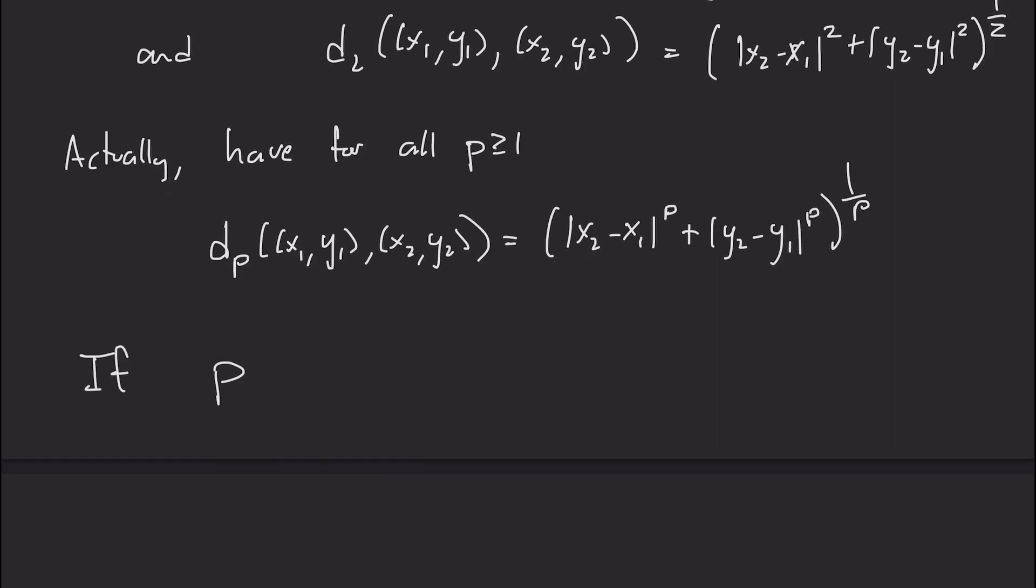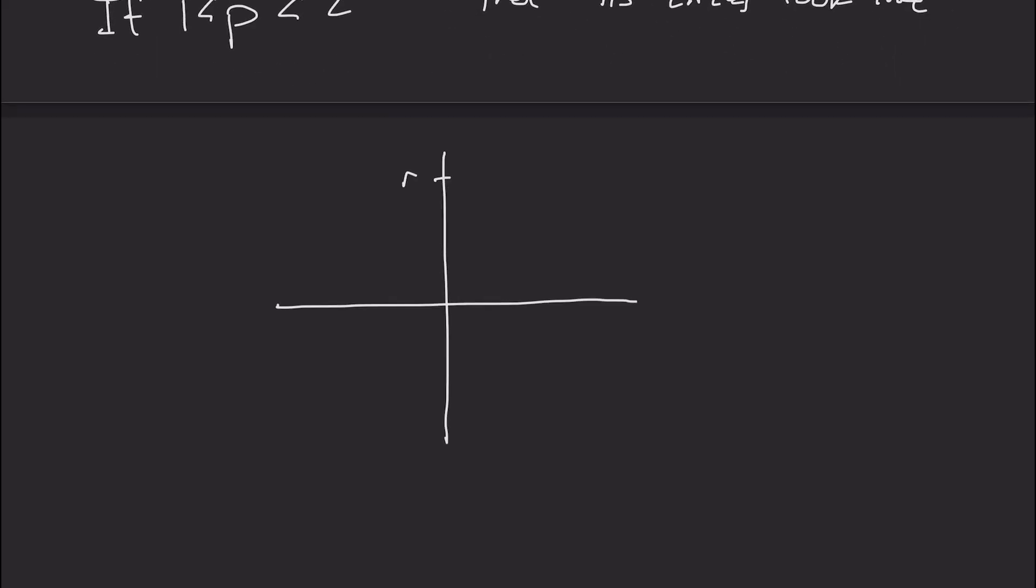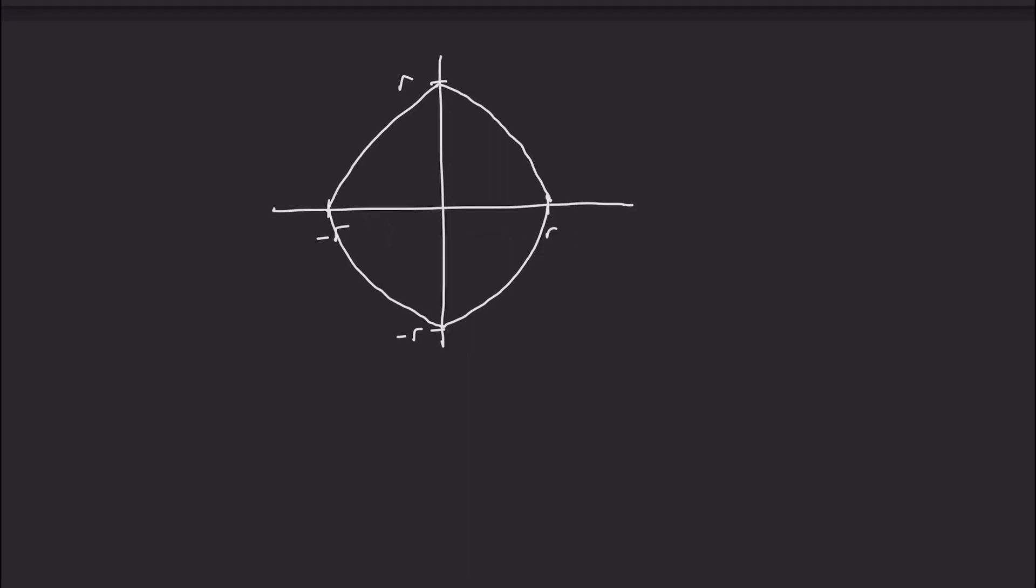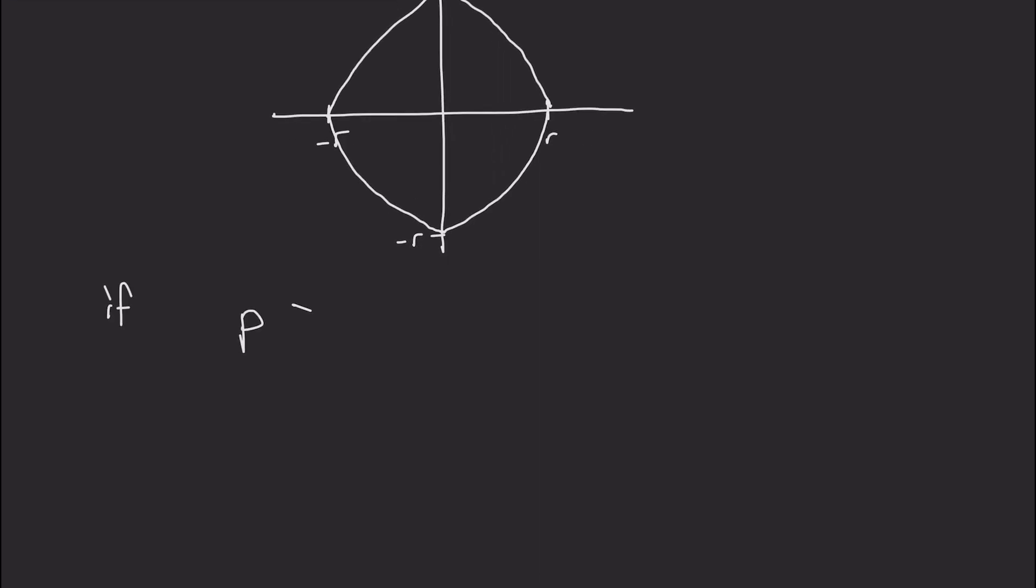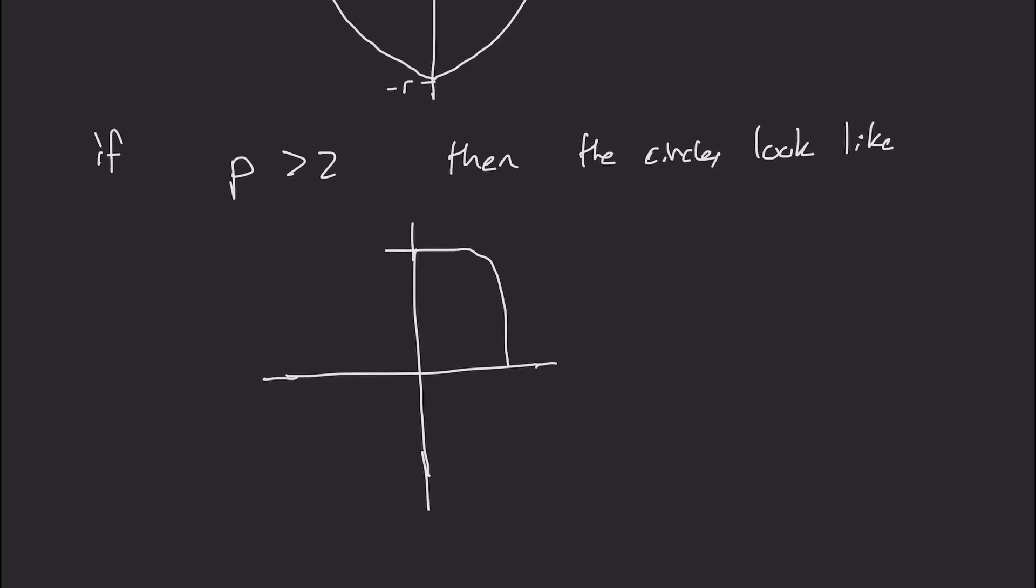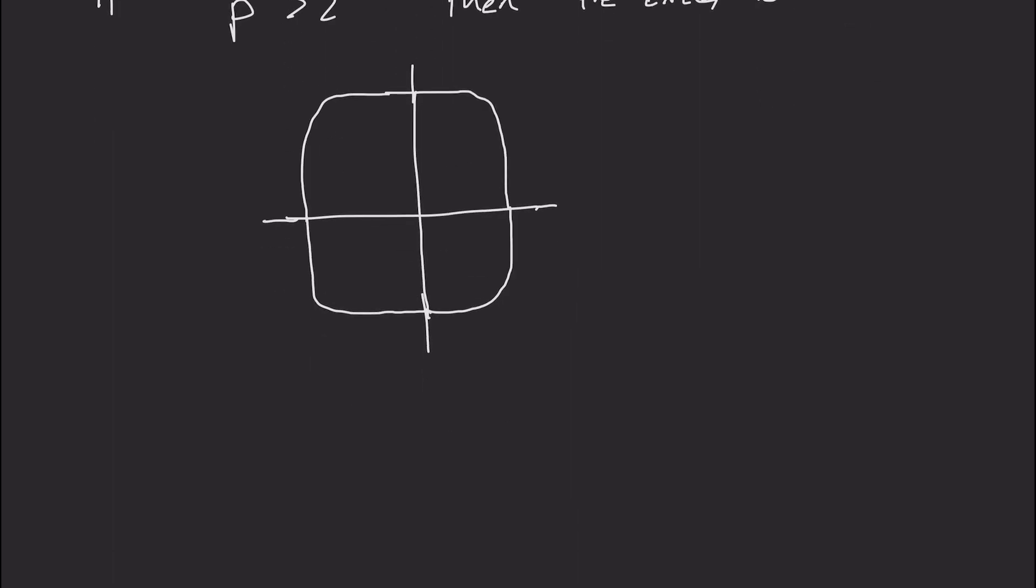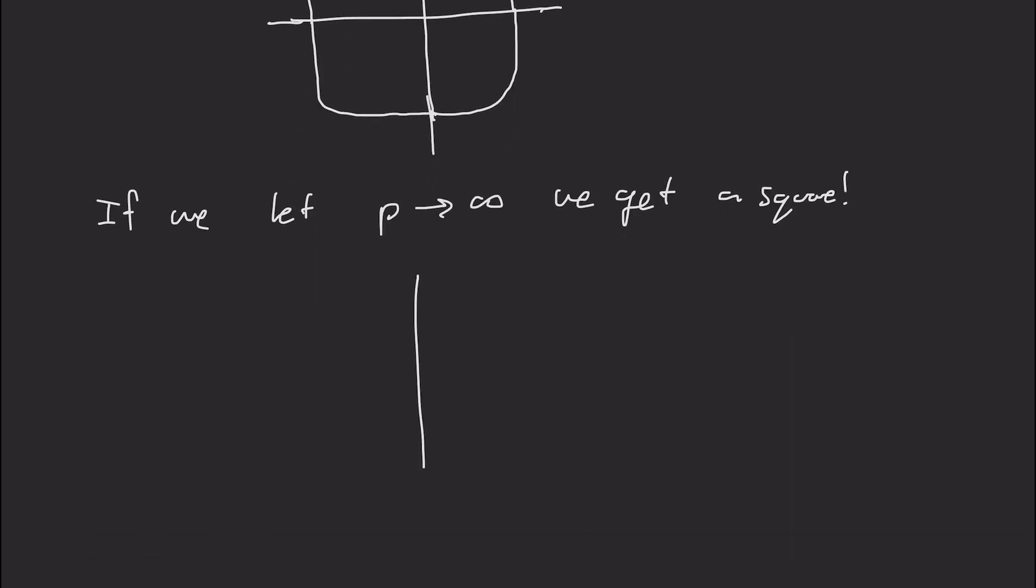Okay, well, if p is between 1 and 2, then the circle kind of just looks like a fatter diamond. And if p is larger than 2, then the circle kind of looks like a rounded square. And in fact, we can let p go to infinity, and we do have a d sub infinity. And the circle that we get is actually a square.